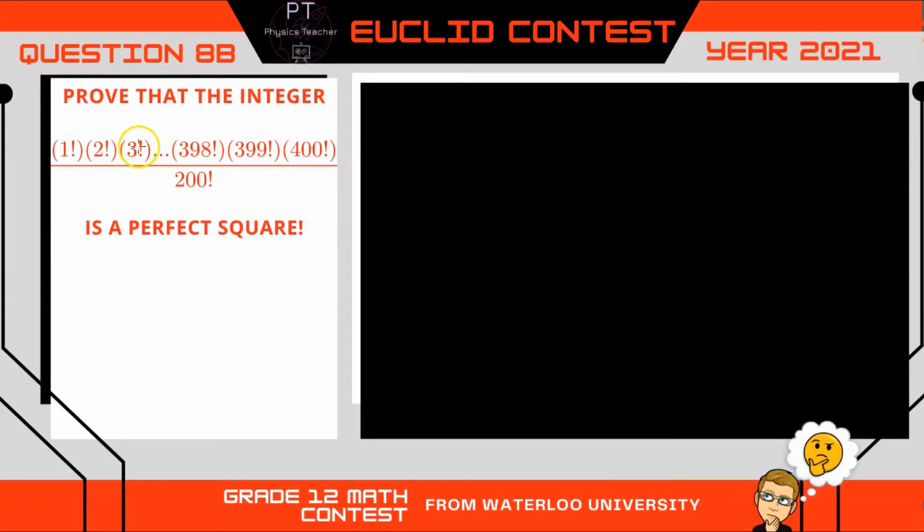Alright, so what we want to do is prove that this is a perfect square. Let's start by just calling this equal to n. Now let's look at a factorial, something simple, 4 factorial. 4 factorial just means we take 4 and multiply it by 3, 2, all the way down to 1. But I can rewrite 4 factorial as 4, so I just pull out the 4, then multiply it by 3 factorial.